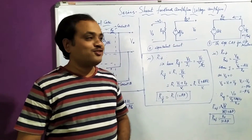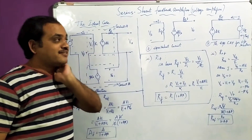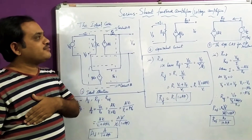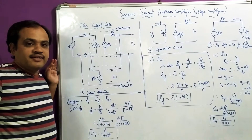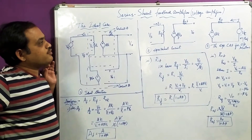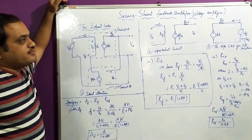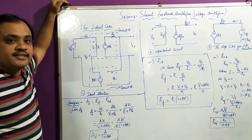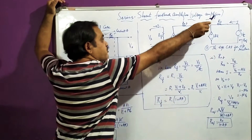Welcome to today's session. In our today's session we are going to discuss the first topology, that is series-shunt feedback amplifiers. In our last session we discussed the four basic topologies, and now we will discuss the first one — the series-shunt feedback amplifier or series-shunt feedback topology, which is also called a voltage amplifier.